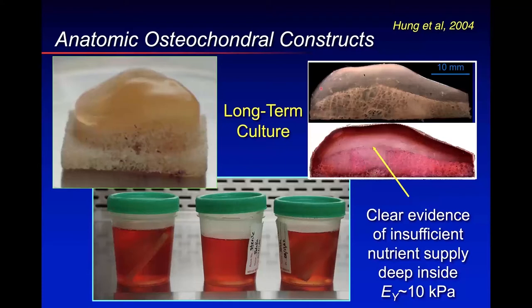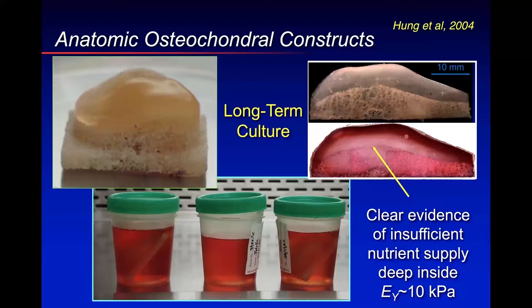What we discovered is that in a regular cross-section, you could see opacity near the surface, but after 28 days the interior was still quite translucent. The saffron-O stain for glycosaminoglycans showed they were deposited near the surface closest to the media, but deeper inside the tissue did not grow — with a modulus as low as 10 kilopascal even in the stiffest regions. This was quite disappointing. The question was: since this patella is the natural size of the tissue, why couldn't nutrients reach deep inside?